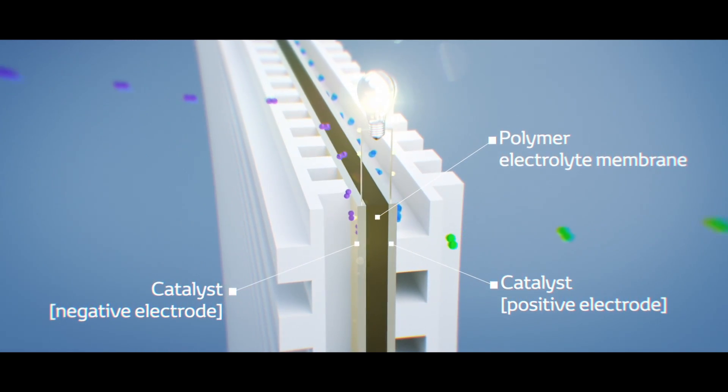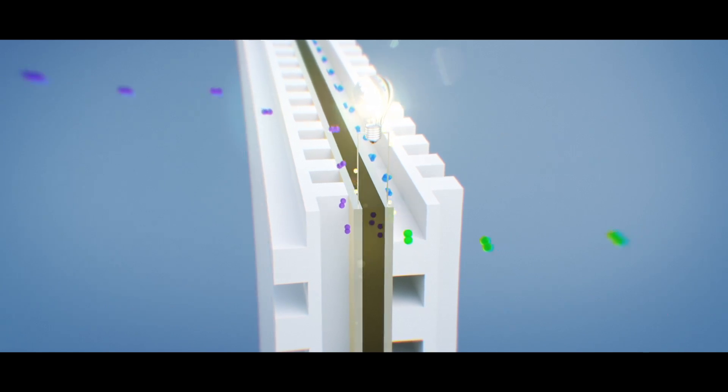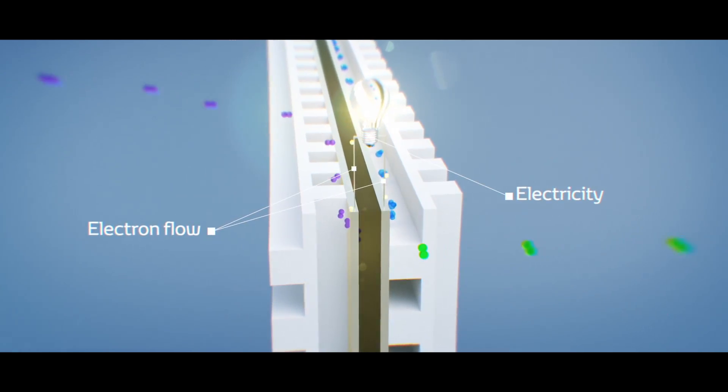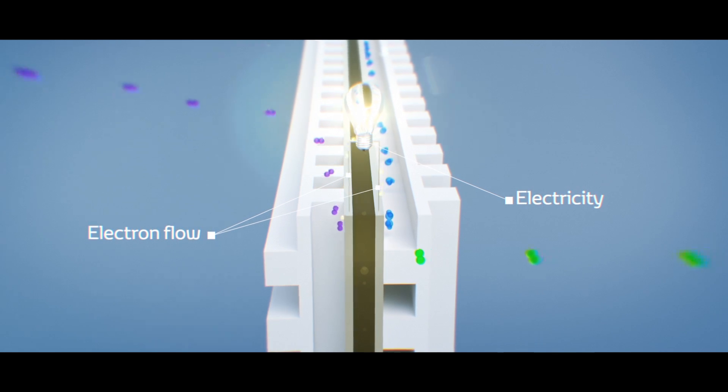Hydrogen is supplied to the negative anode and activates, releasing the electron. Then the electron flows to the positive cathode to generate the electricity.